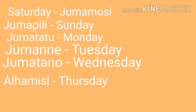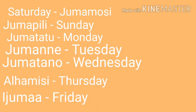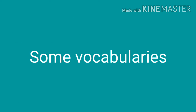Then Thursday — this one you have to cram: alhamisi. Just cram this one because it doesn't follow the numbered order. And Friday — ijuma — cram it too, it doesn't follow the order. So you have: juma mosi, juma pili, juma tatu, juma nne, juma tano, alhamisi, ijuma. Good to go.